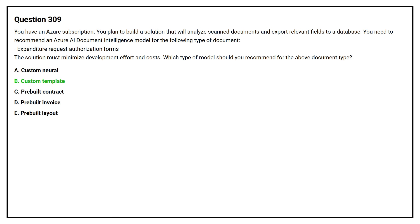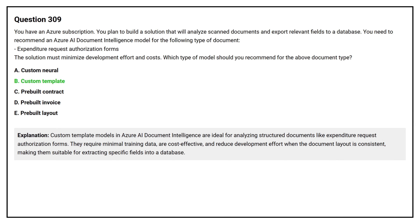The correct answer is Option B: Custom Template. Custom Template models in Azure AI Document Intelligence are ideal for analyzing structured documents like an expenditure request authorization form. They require minimal training data, are cost-effective, and reduce development effort when the document layout is consistent, making them suitable for extracting specific fields into a database.